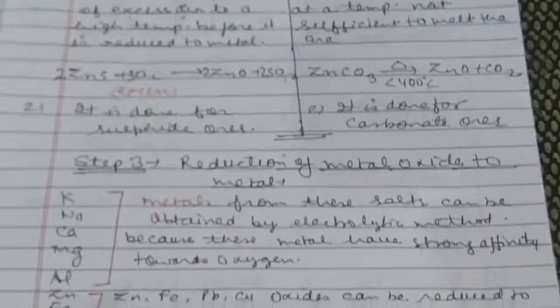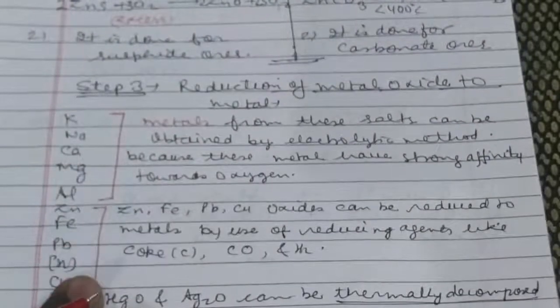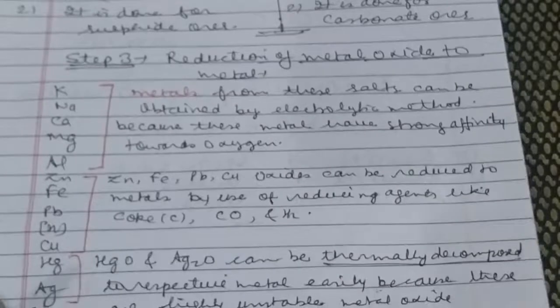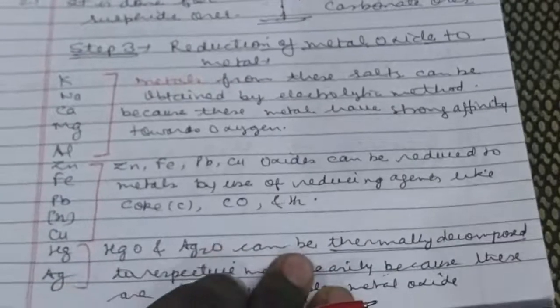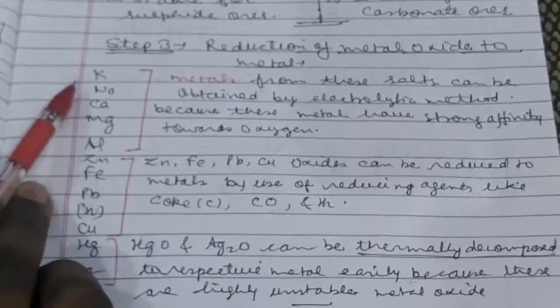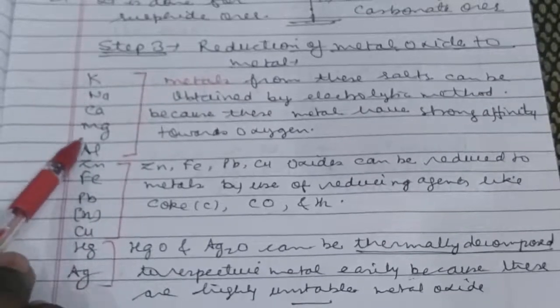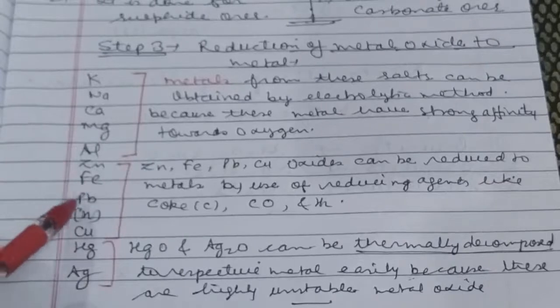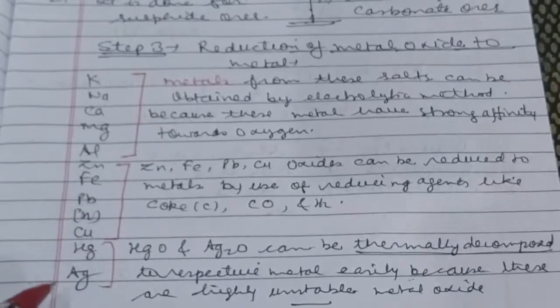The next step is the reduction process of metal oxide to metal. What is the activity series? This activity series of metals: potassium, sodium, calcium, magnesium, aluminium, zinc, iron, lead, hydrogen, copper, mercury, silver.